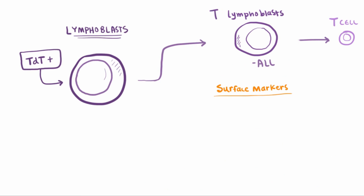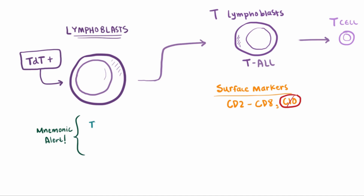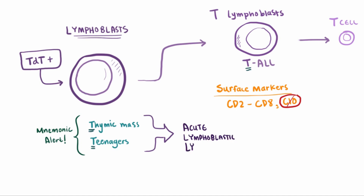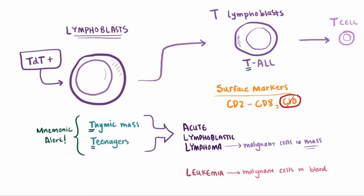For the T lymphoblastic sort, they'll usually express surface markers that range from CD2 to CD8. Unlike B-ALL, these blasts do not express CD10. T-ALL usually presents as a thymic mass in the mediastinum — T for thymus — and this happens most often in teenagers, T for teens. We call this acute lymphoblastic lymphoma rather than leukemia, because in leukemia the malignant cells float around in the blood, whereas lymphoma means the malignant cells are forming a mass — in this case a thymic mass.